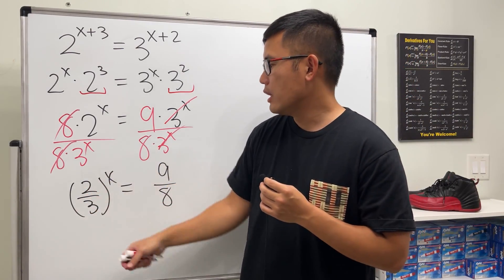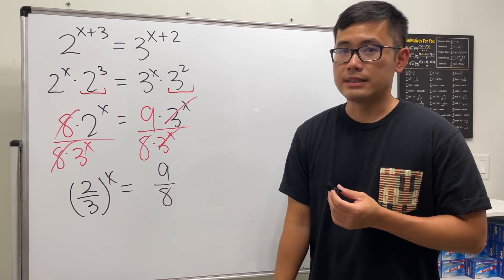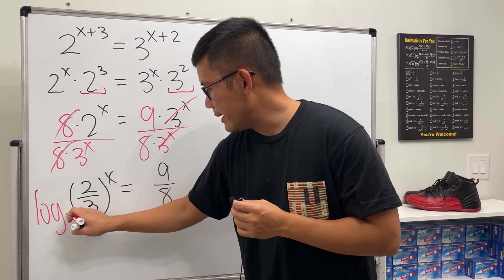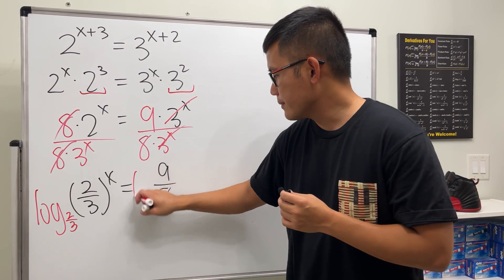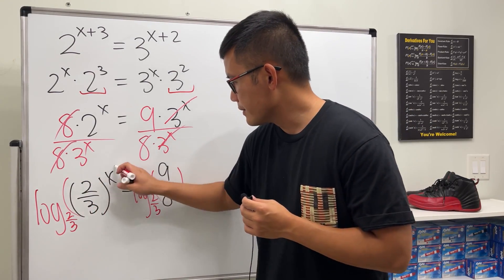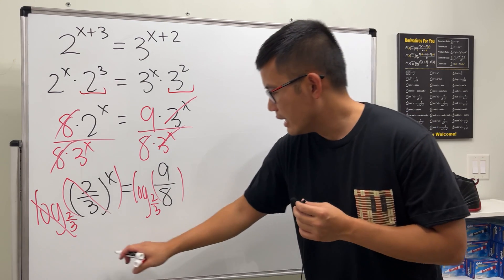Now we have a number raised to x power is equal to this number is positive and we'll just go ahead and simply take log with this for the base namely 2 over 3. So let's just do log base 2 over 3 on both sides.